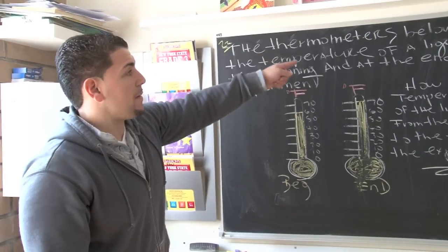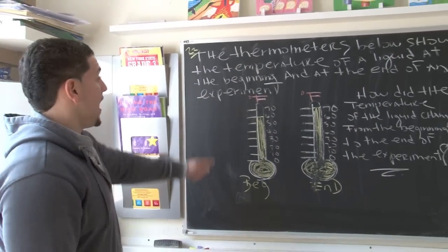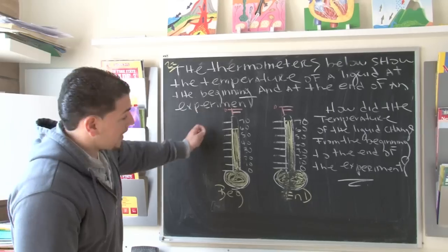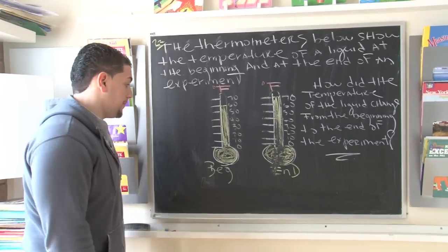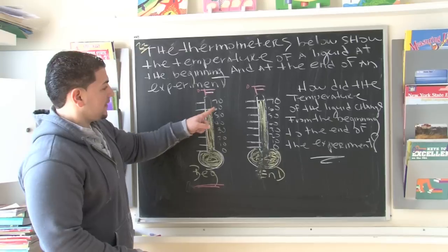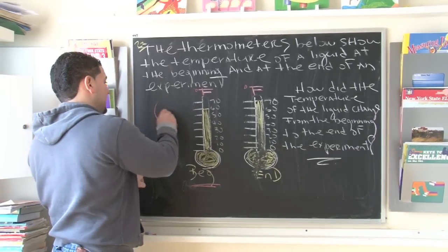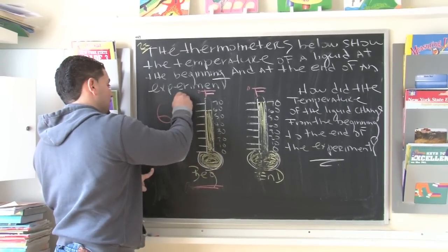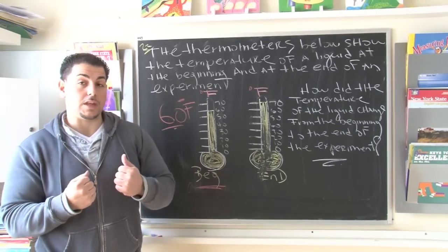It says, the thermometers below show the temperature of a liquid at the beginning of an experiment and at the end of an experiment. So if you look at the beginning, the thermometer reads 60 degrees Fahrenheit. This is before we do the experiment.